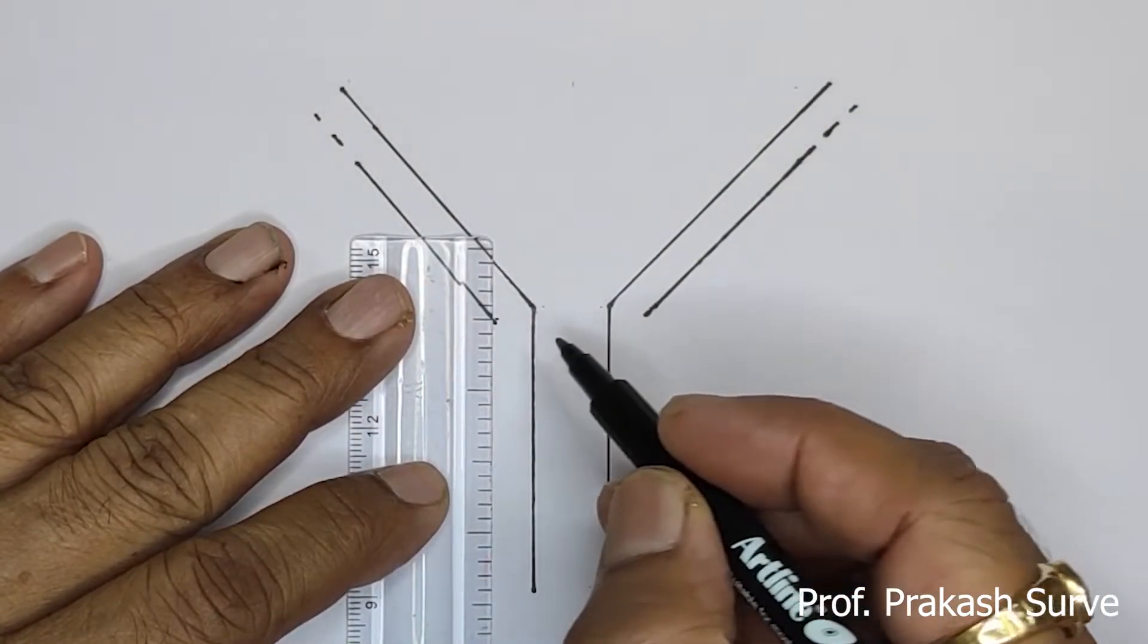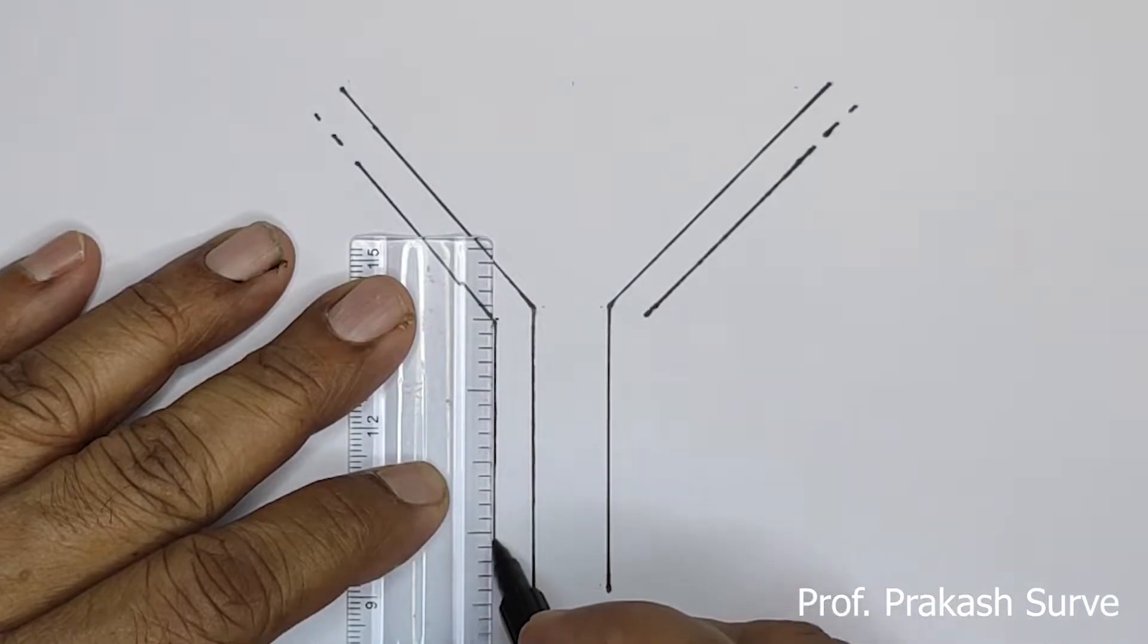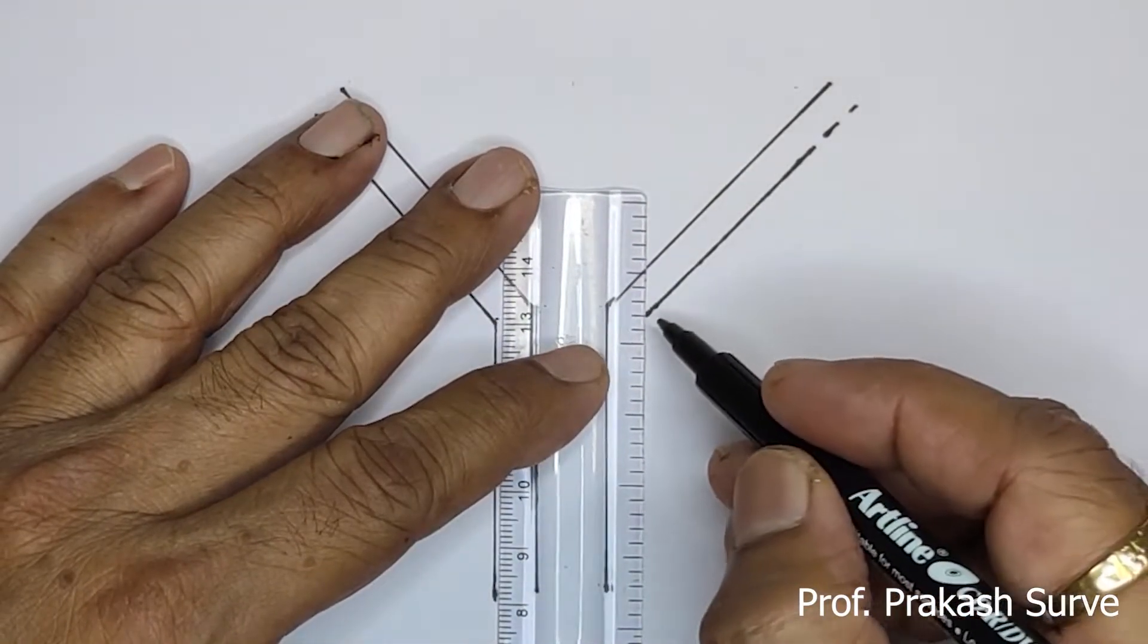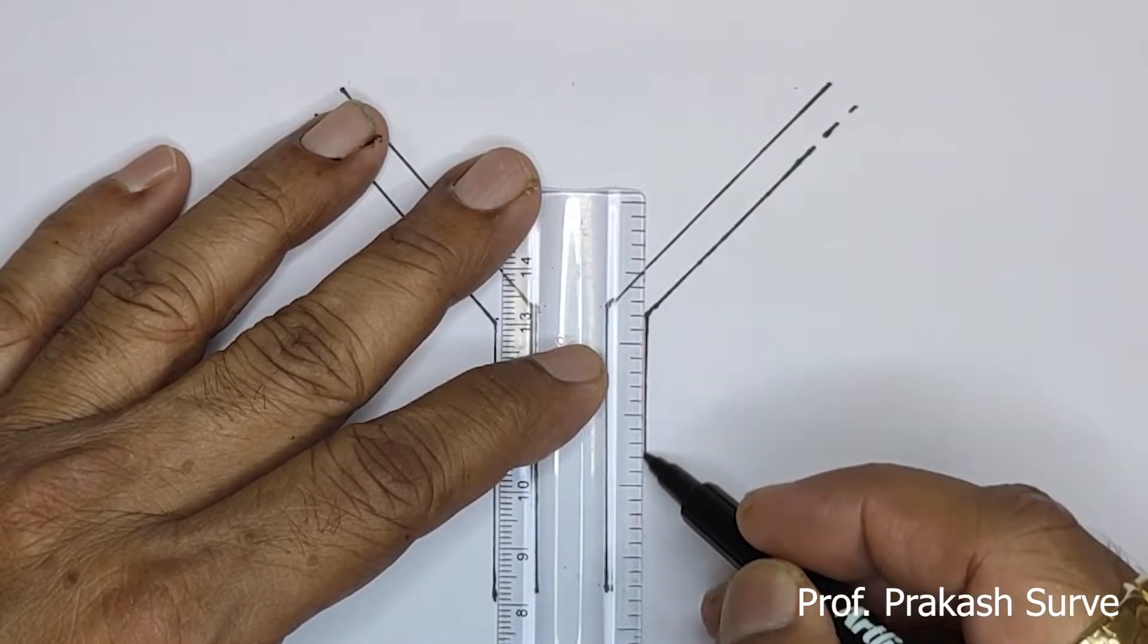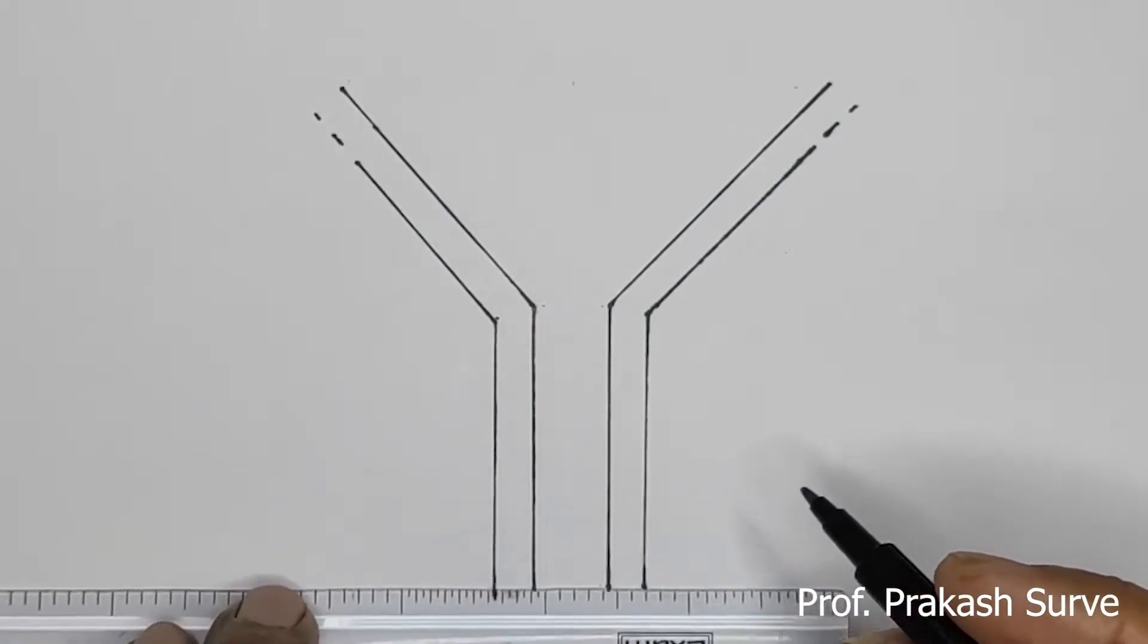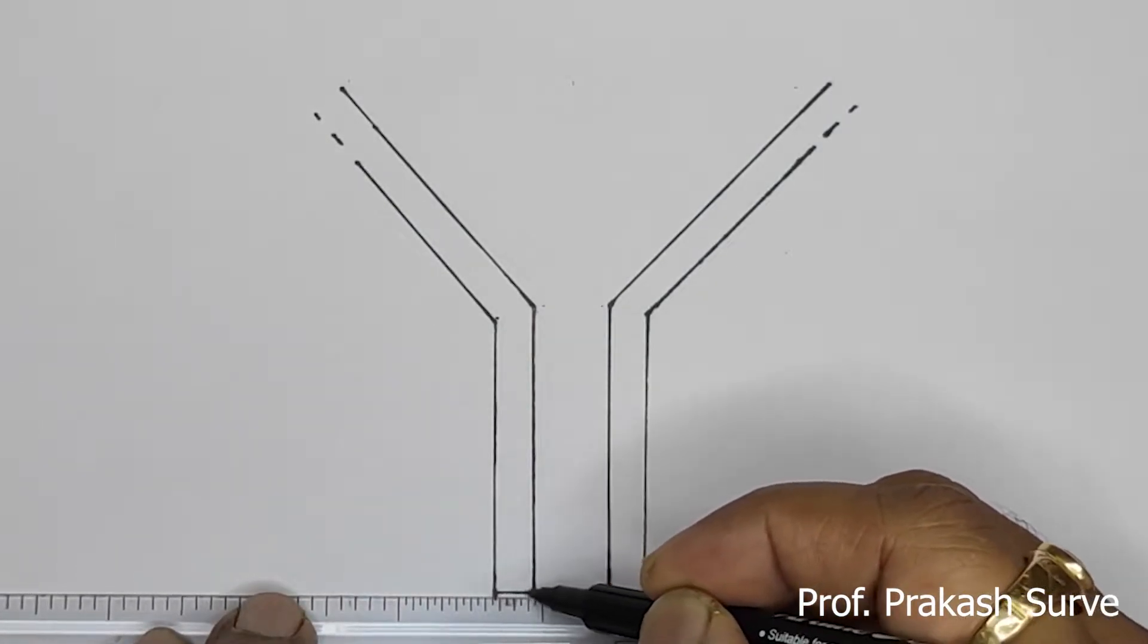This is continuing downward, and here also continue downward. So this one we got the heavy chain and connect here.